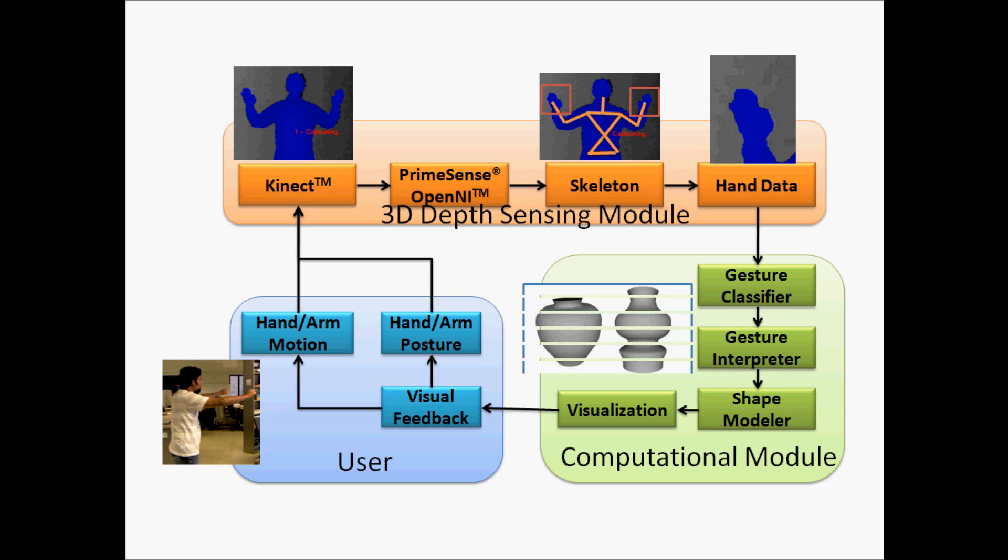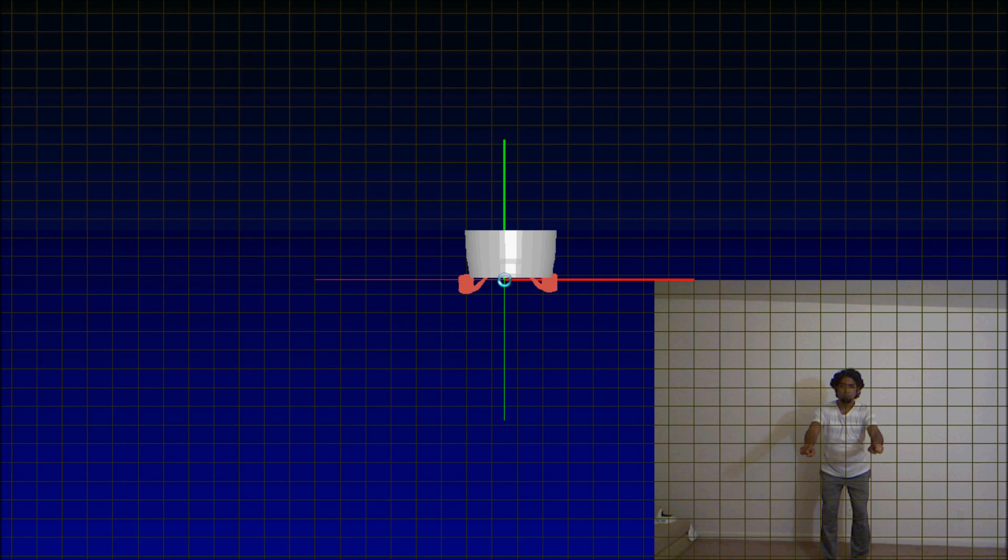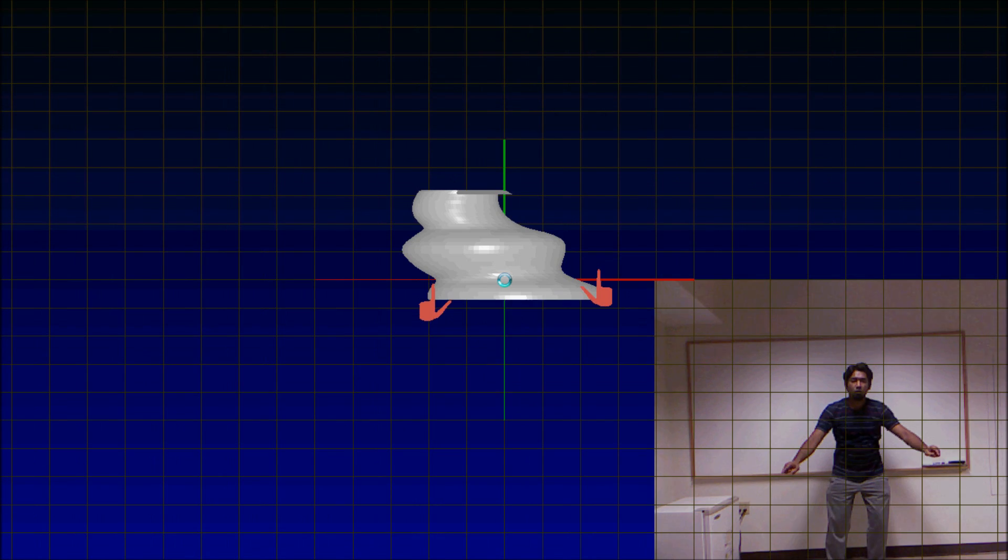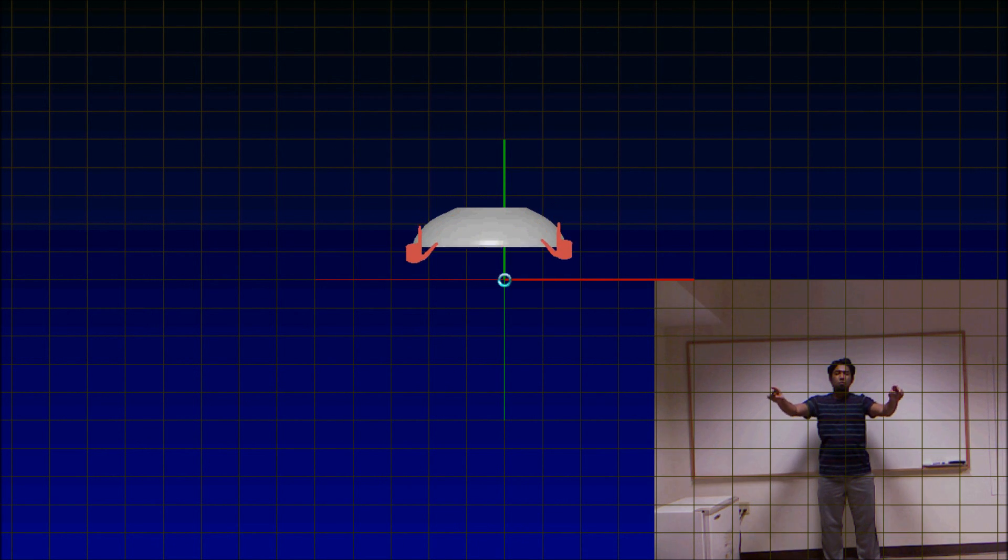The posture along with the motion of the hands determines the complete gesture, which provides information for creating new 3D shapes and modifying existing ones. For creating a shape, the user points both hands towards the screen and defines a profile. Based on how the user moves their hand, the profile turns into a 3D model in real time.